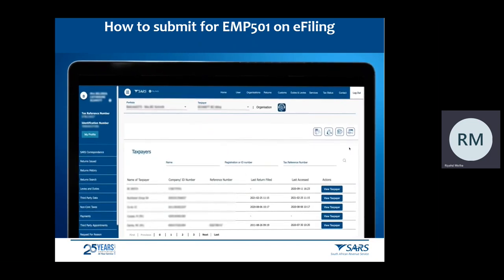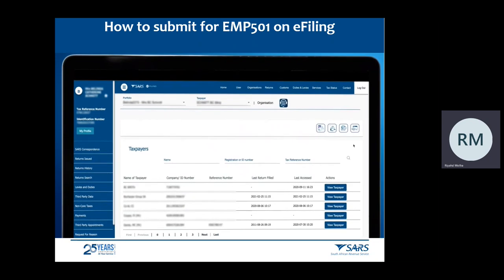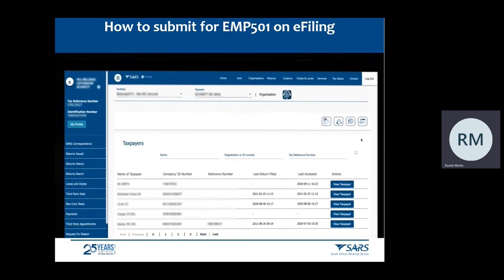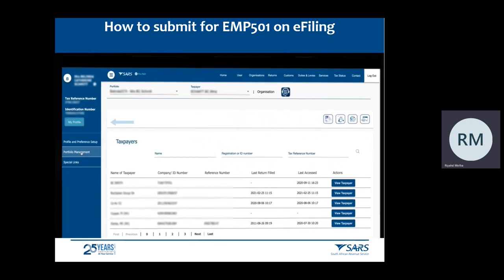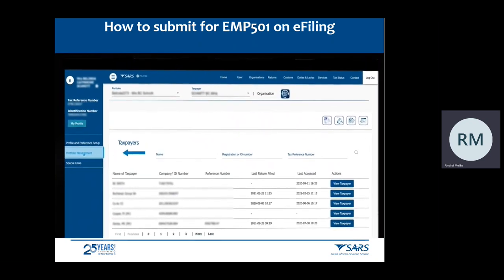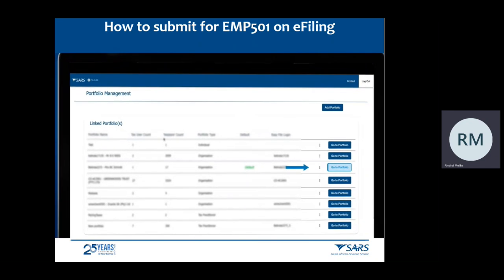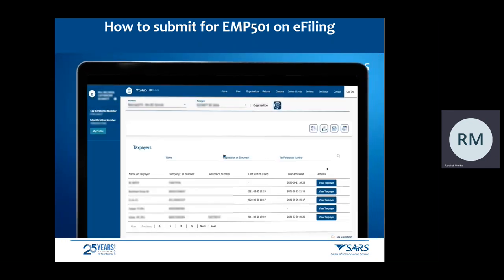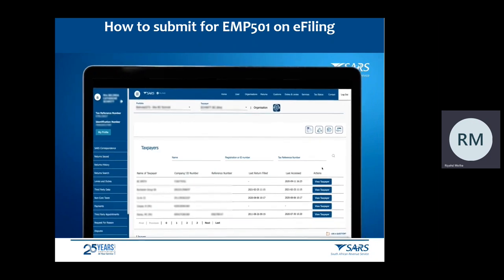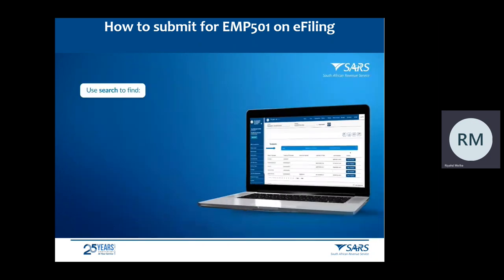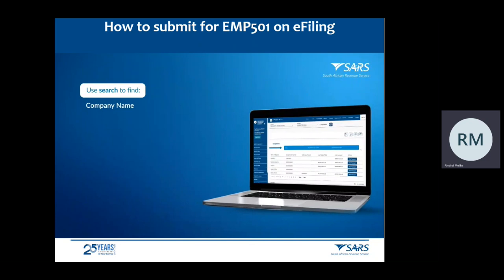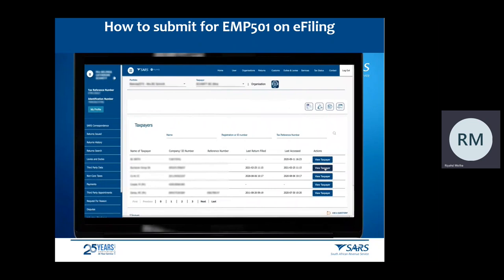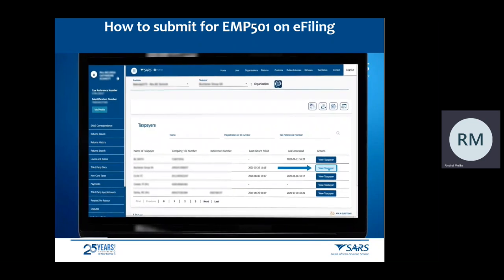You will land on the dashboard. If the applicable organisation portfolio is not set as default, you will need to open it. Click My Profile on the left and then Portfolio Management. Click Go to Portfolio once you have selected the applicable portfolio. You can use the search function to look for a specific taxpayer using the company name, registration number, or tax reference number. Once you have found the taxpayer, click View Taxpayer.